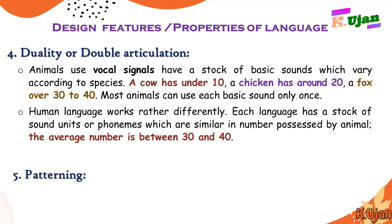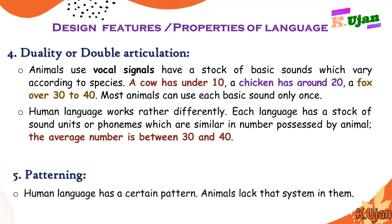The fifth property or design feature of language is patterning. According to Hockett, human language has certain developed patterns. On the other hand, animals lack that system — they do not have patterns to follow and make their communication in different, unstructured ways.